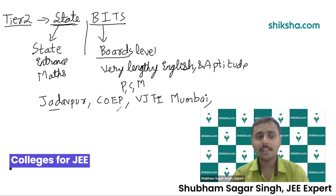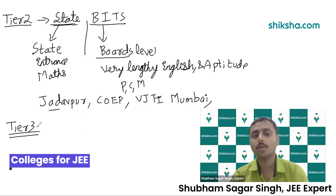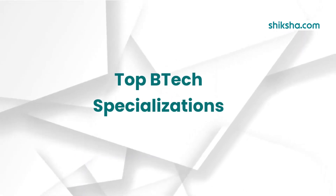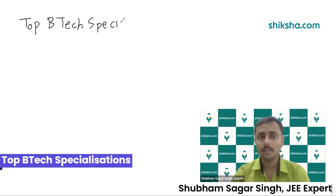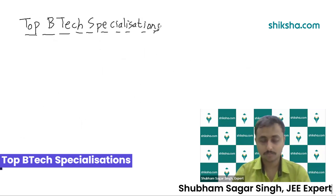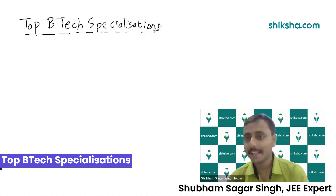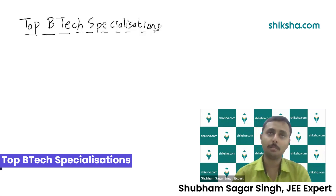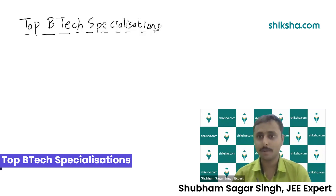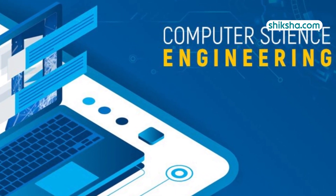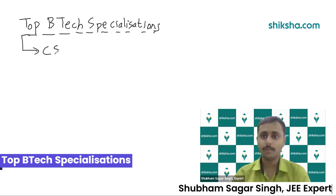Now let's talk about tier three colleges. Tier three colleges are basically good private colleges. According to me, subjects are as important as college. If you are getting IIT Bombay Mechanical Engineering versus IIT ISM Dhanbad Computer Science Engineering, I would always go for Computer Science Engineering given my interest. I should not go to a branch I am not interested in. But if I am interested in both, I should prefer the branch rather than preferring the subject.